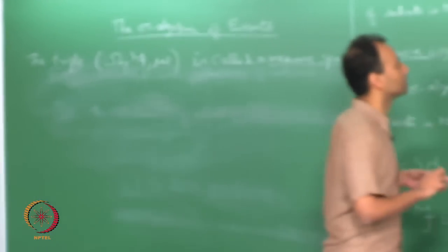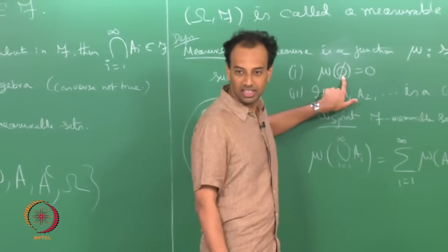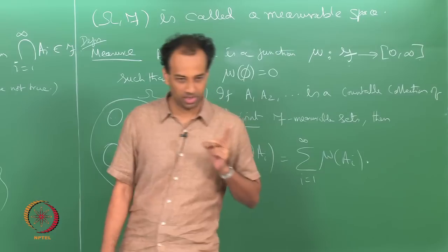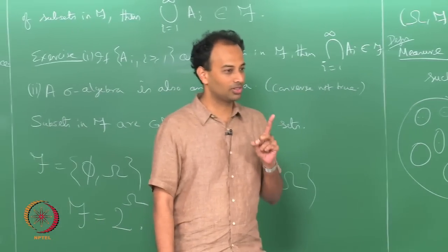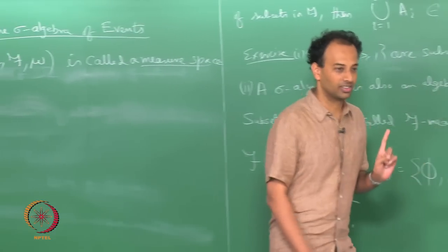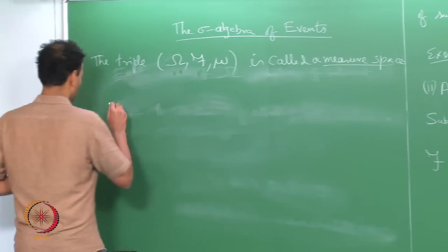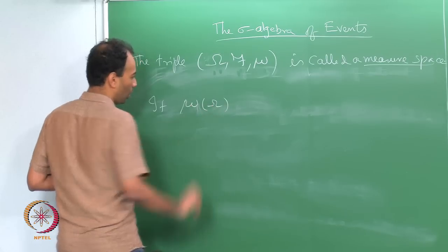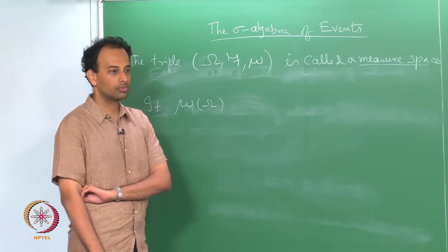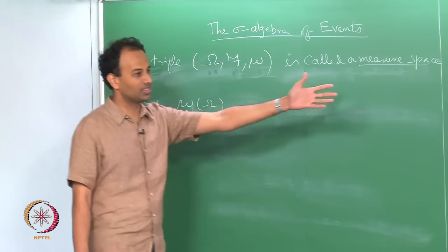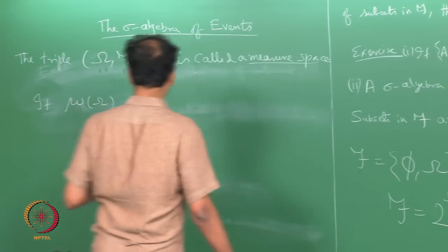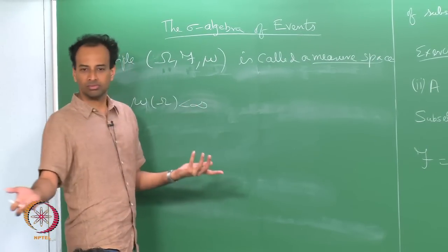Since phi is in the sigma algebra, omega is also in the sigma algebra. So the whole space is always F-measurable and omega must have a measure associated with it. So mu of omega is well defined. mu maps F-measurable sets to [0, infinity] so it could be that mu of omega is finite — and a probability measure is a special case where the measure assigns a finite value to the entire space.